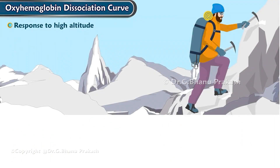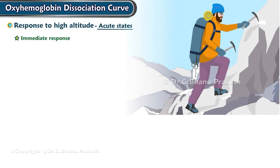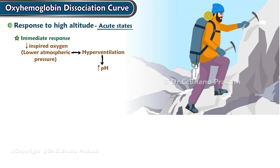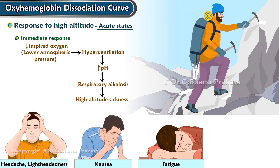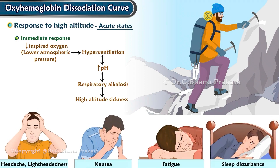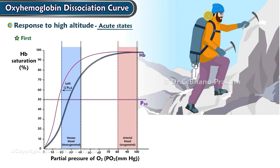The immediate response to high altitude is hyperventilation in response to lower inspired oxygen and lower atmospheric pressure, which causes an increased pH and leads to respiratory alkalosis. This develops into high-altitude sickness with manifestations of headache, lightheadedness, nausea, fatigue, and sleep disturbance. At first, this causes a left shift in the oxygen-hemoglobin dissociation curve, releasing less oxygen to the tissues.